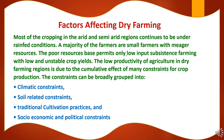Now we will study the factors affecting dry farming. Most of the cropping in arid and semi-arid regions continues to be under rain-fed conditions. A majority of farmers are small farmers with meager resources. The poor resource base permits only low-input subsistence farming with low and unstable crop yields. The low productivity is due to the cumulative effect of many constraints, broadly grouped into four categories: climatic constraints, soil-related constraints, traditional cultivation practices, and socioeconomic and political constraints.